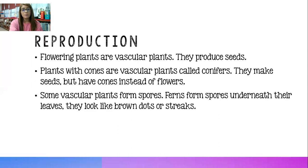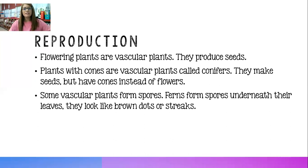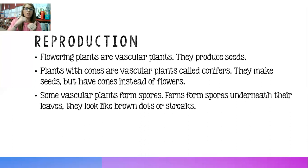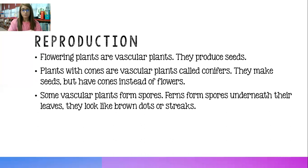Some vascular plants form spores. Ferns — if you've ever seen a fern, right now is a time of year where a lot of people might be buying ferns because they're kind of fall plants. They have spores underneath their leaves. If you look underneath the leaf they're going to look like brown dots or brown streaks, and those are the spores that are going to help create more ferns.